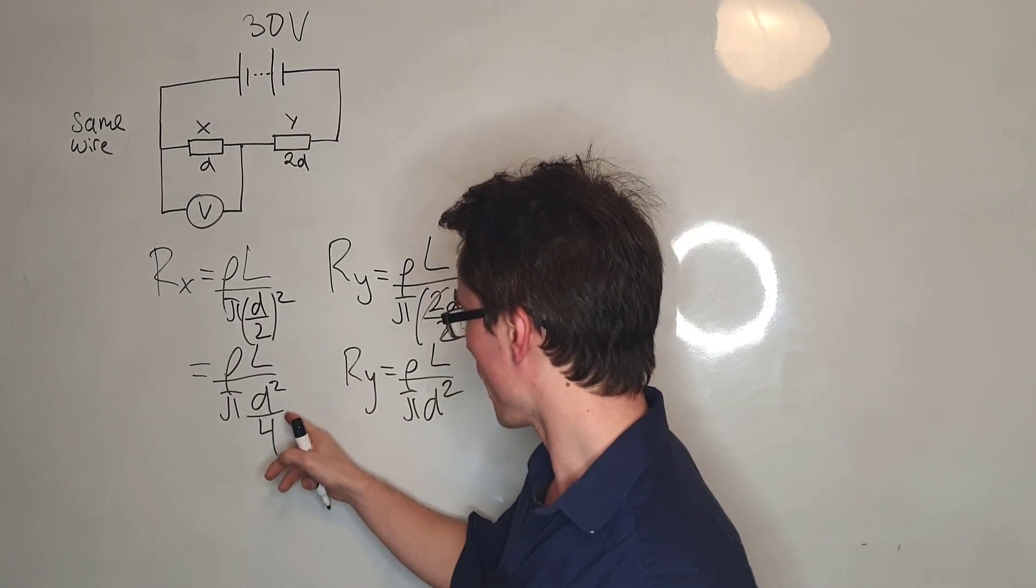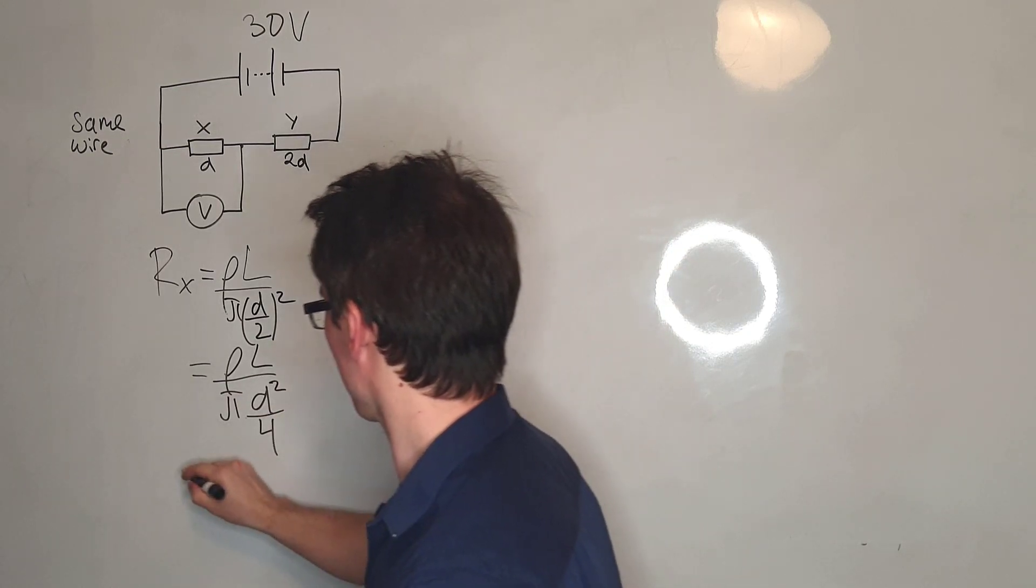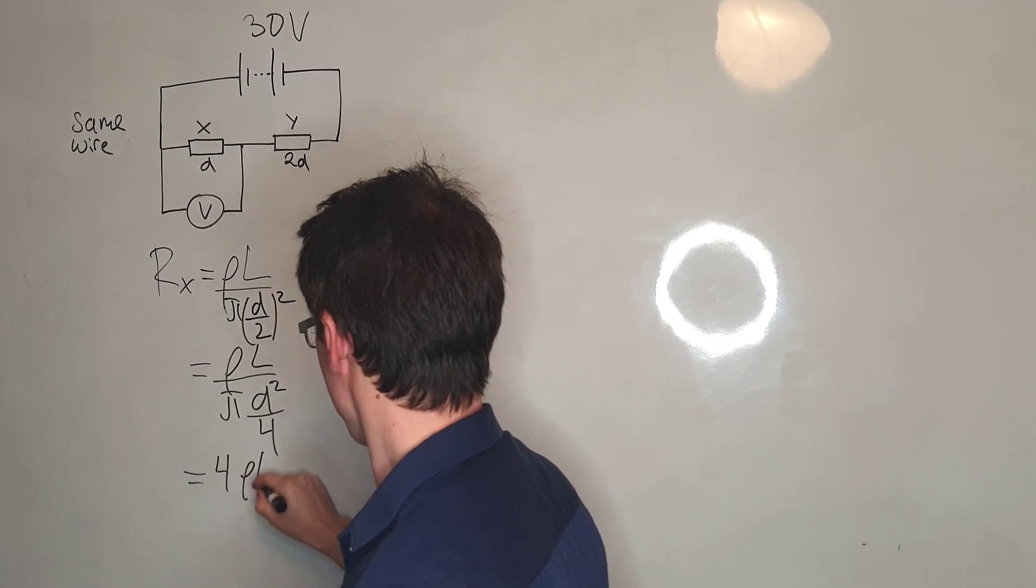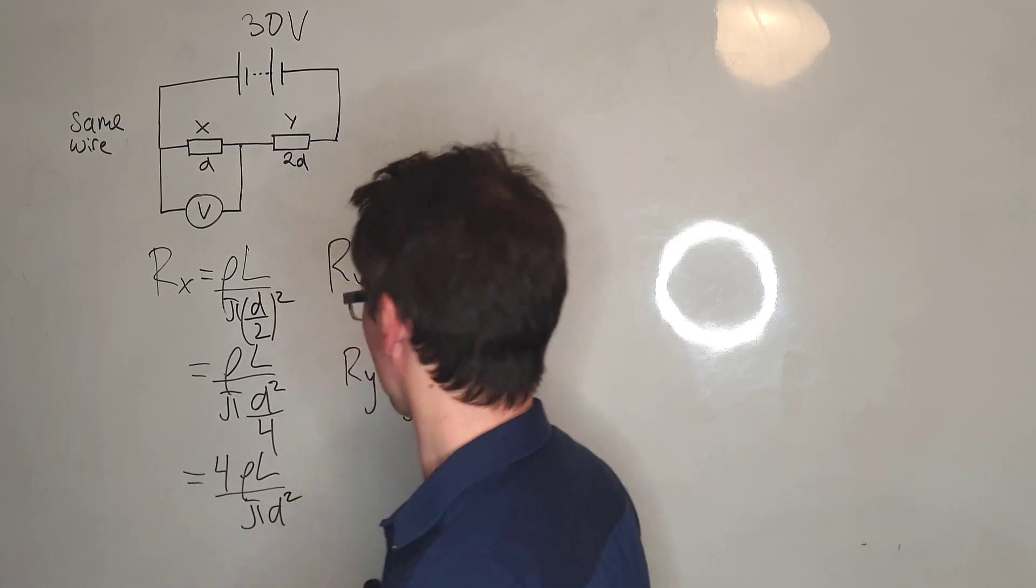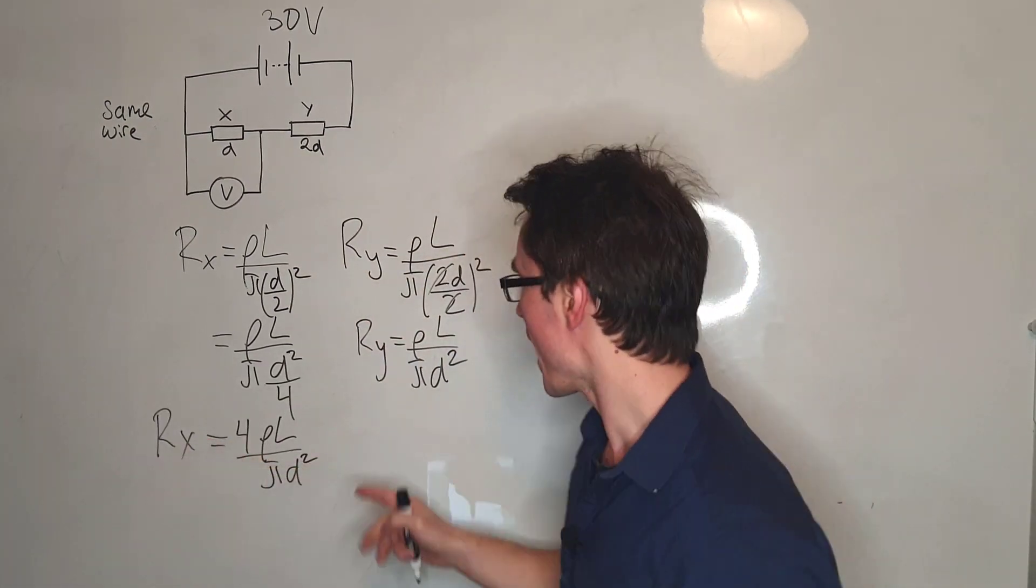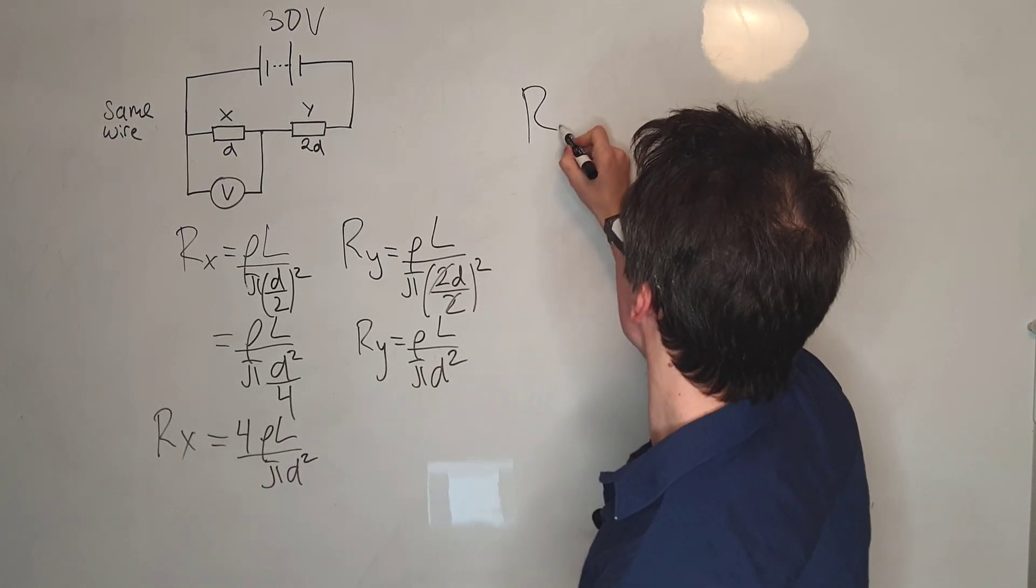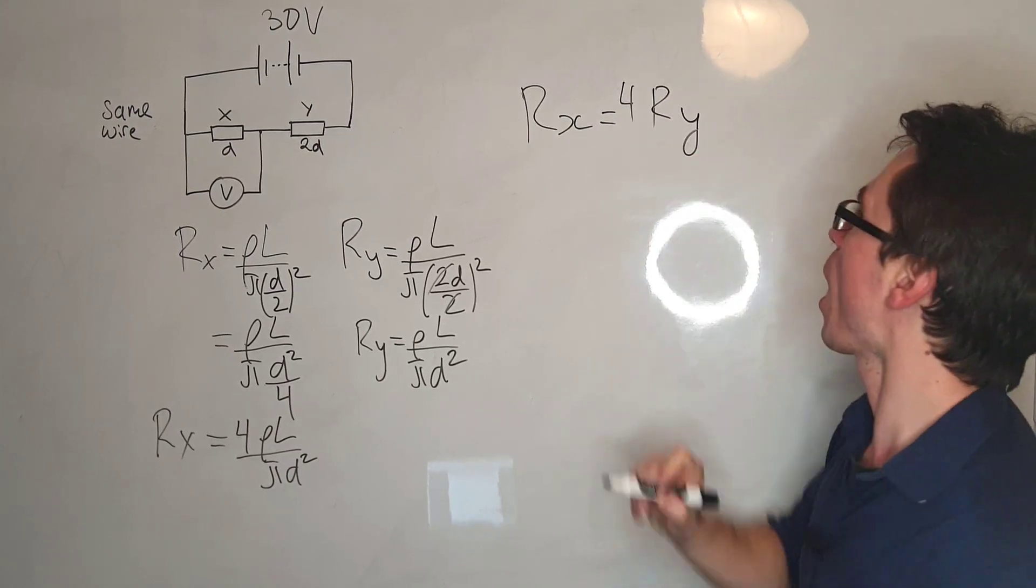Coming back to this equation, the factor of 1 over 4 means that essentially we're multiplying by 4. So we're going to have 4ρL divided by πD squared. Notice that Rx is essentially 4 times Ry, so we can just write this over here that Rx is equal to 4 times Ry.